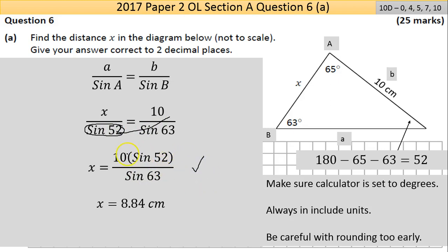Now I put it in the calculator and type it all in one go. If you round here, you round there, you'll incur a penalty. I put it in the calculator: I get 8.84. That's a length, so it's centimeters.